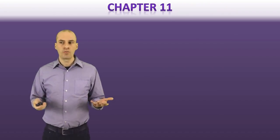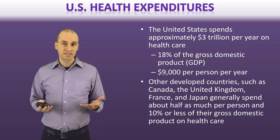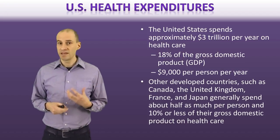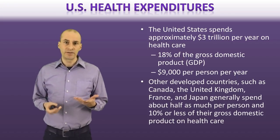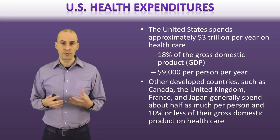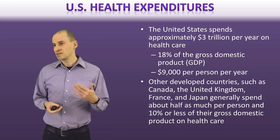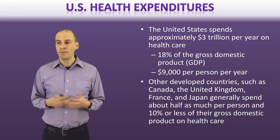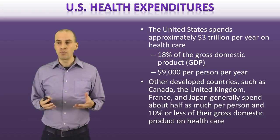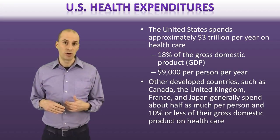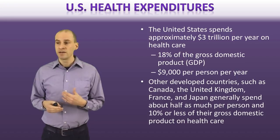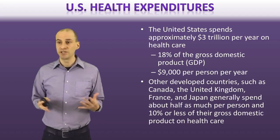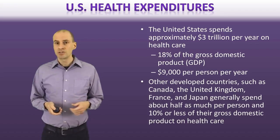Chapter 11 talks about the healthcare system and health insurance policies. In the United States, we spend a tremendous amount of money on healthcare — about $3 trillion every year, which is about 18% of our GDP, or roughly $9,000 to $11,000 per person per year as prices continue to go up. In other countries, it's a much smaller burden in terms of gross domestic product and they spend much less per person per year. So we have real substantial challenges in our healthcare system.